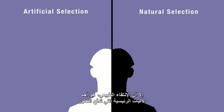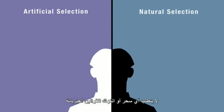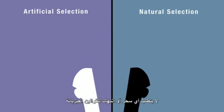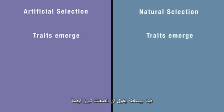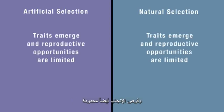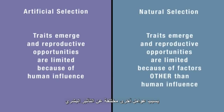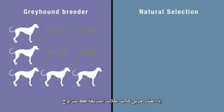And yet natural selection, one of the major mechanisms that drives evolution, requires no magical suspension or violation of physical laws. It simply says that traits also emerge and reproductive opportunities are also limited because of factors other than human influence.